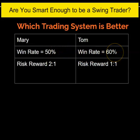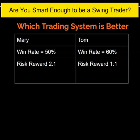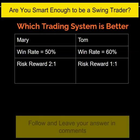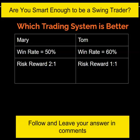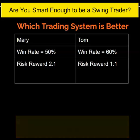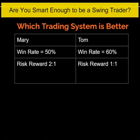But Mary has a risk/reward ratio of two to one — when she wins, she wins twice as much as she loses. While Tom has a risk/reward of one to one — he loses as much as he wins. Which algorithm do you want to use for your profitable trading system? Which one would you choose — Mary or Tom?